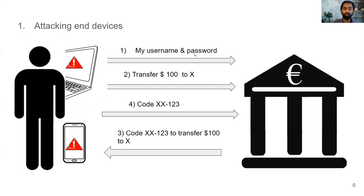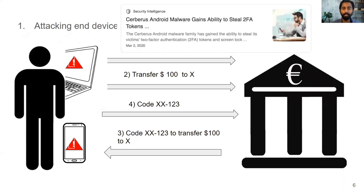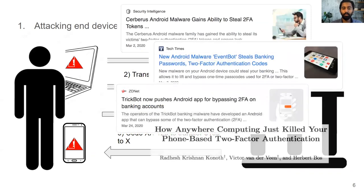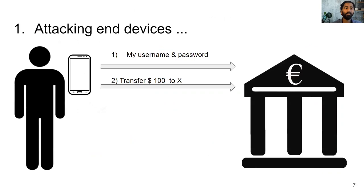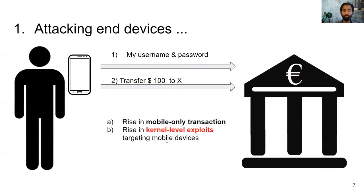Now let's discuss attacks on phone-based two-factor. The first kind of attack is straightforward: the attacker has to compromise all the devices the user uses. Many financial malwares achieve this through targeted phishing attacks. Previous studies also showed how to compromise all devices from one compromised device by exploiting usability and synchronization features. Additionally, many users today only use their mobile phone to issue transactions, and there are kernel-level exploits targeting mobile devices, meaning an attacker only needs to compromise one device. These users have no two-factor protection.